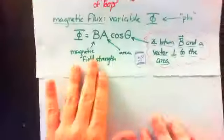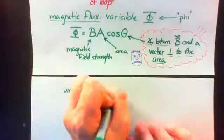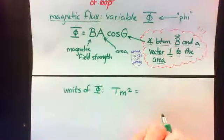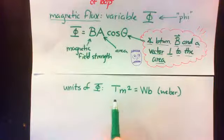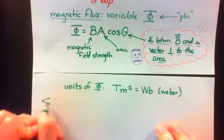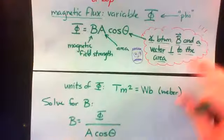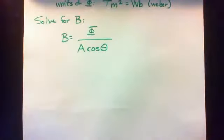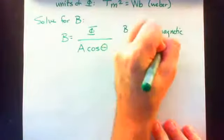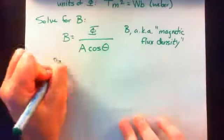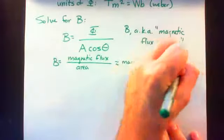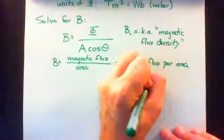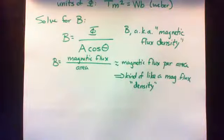The units of magnetic flux — well, if you look at the equation, the units should be tesla meters squared. But tesla meters squared is actually equal to another unit defined as a Weber, abbreviated Wb. So the units of magnetic flux are tesla meters squared, which are the same as a Weber. Now if we solve the equation for B, we get B equals magnetic flux divided by A cosine theta. Sometimes B is called the magnetic flux density, because it's kind of like a density of magnetic flux per area.